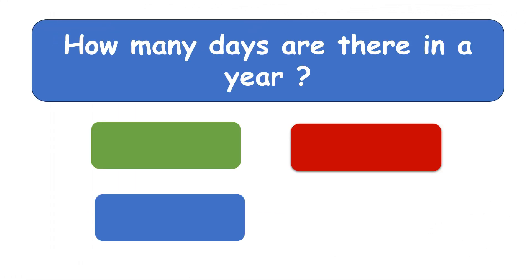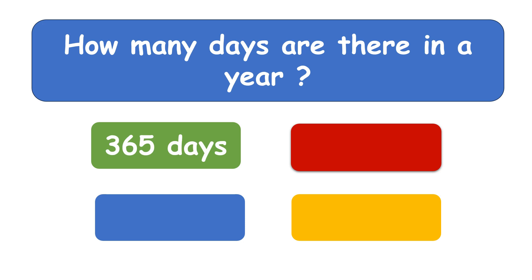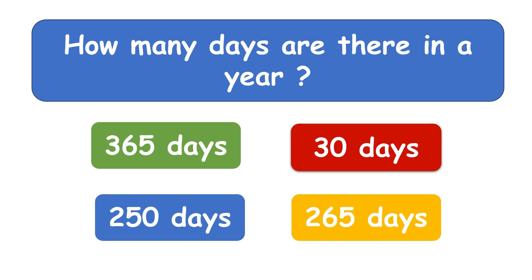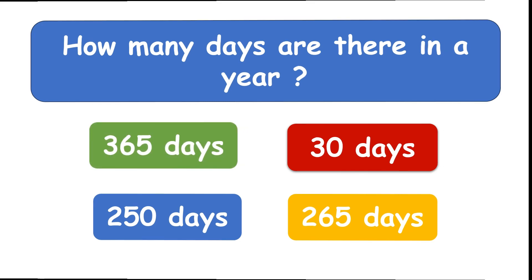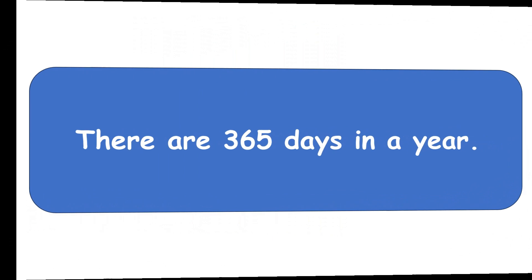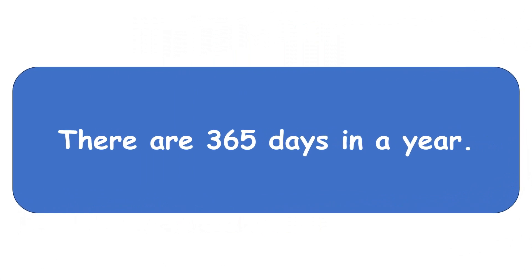How many days are there in a year? Three hundred and sixty-five days. There are 365 days in a year.